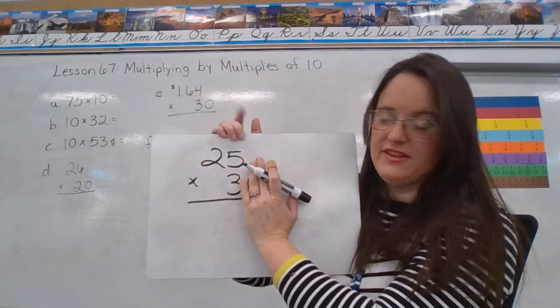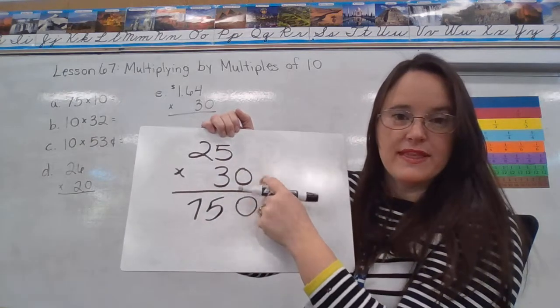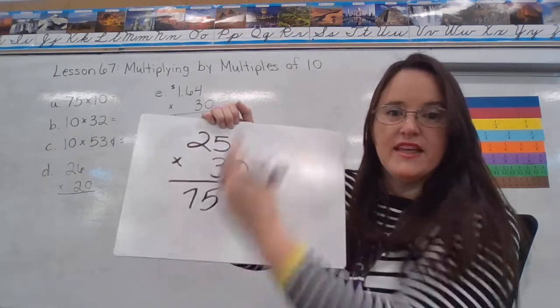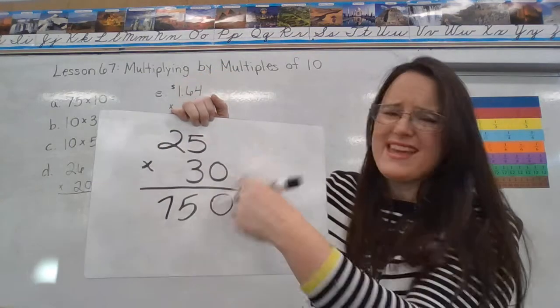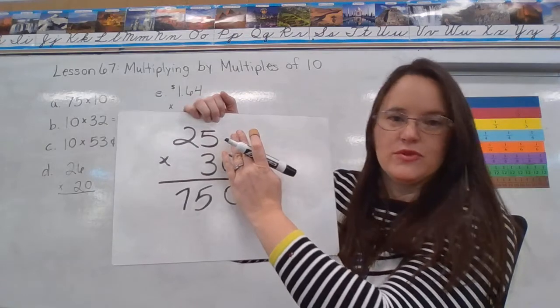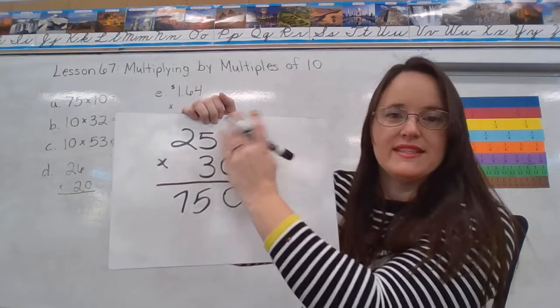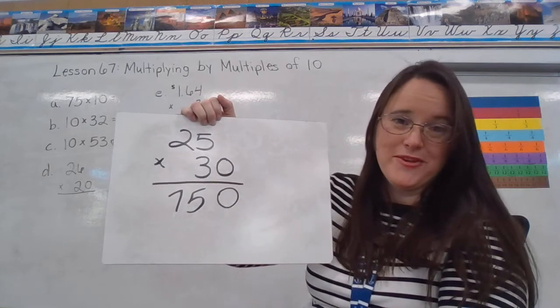25, 50, 75. And then this 0 that they wrote kind of off to the side, they're just dropping that down into the answer. I think the reason the book writes it like this is because they want to remind you, don't worry about that 0. That 0 just goes into the answer. Don't make this problem harder than it is.